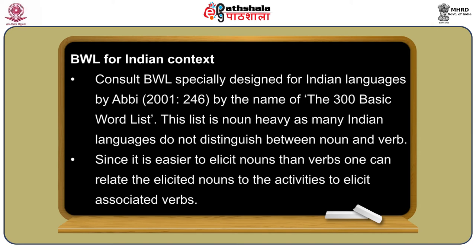In addition to the BWL, I have also given a basic word list for Indian languages — you may consult Appi 2001, page 246, by the name of '300 basic word list'. This list is noun-heavy, as many Indian languages do not distinguish between noun and verb, and verbs can be easily derived from nouns by various strategies. However, it is basically referring to the Indian context, so you will find the words familiar and easy to elicit. Both Swadesh's basic word list and Appi 2001 can be supplemented by additional words pertaining to the location or context you are working in.